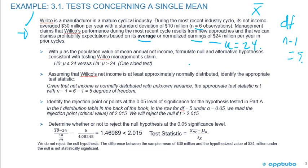With mu as the population mean of annual net income, formulate a null and alternative hypothesis consistent with testing Wilco's claim. So here's the test. The null hypothesis is that the average is less than or equal to $24 million, and the alternative hypothesis is that the average net income is greater than $24 million. So it's a one-sided test.